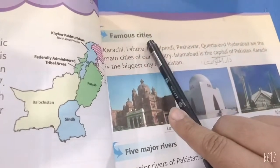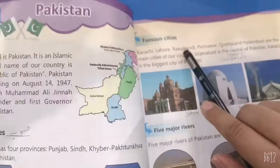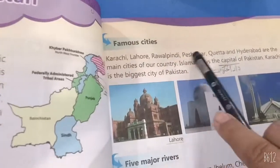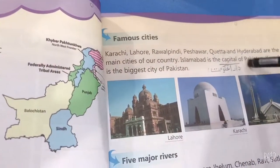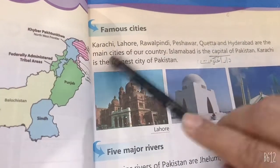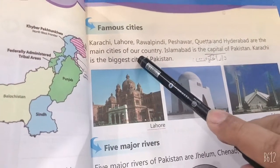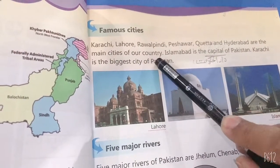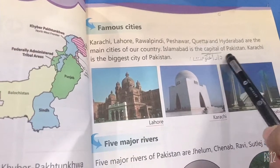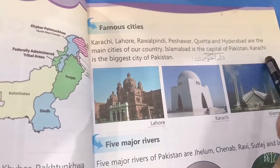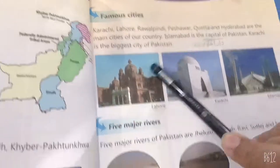Famous cities — Karachi, Lahore, Rawalpindi, Peshawar, Quetta, and Hyderabad are the main cities of our country. Islamabad is the capital of Pakistan. Karachi is the biggest city of Pakistan.